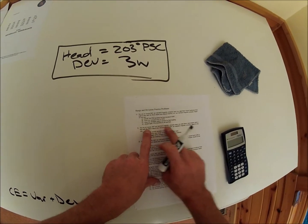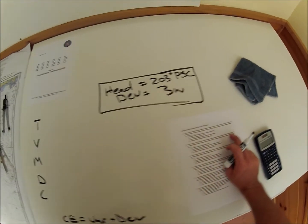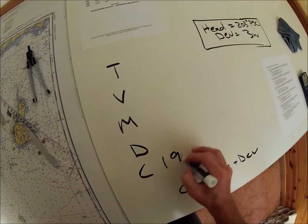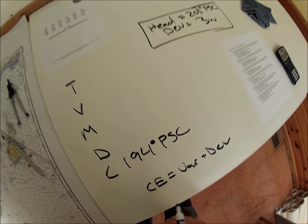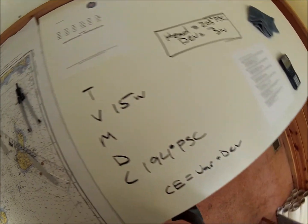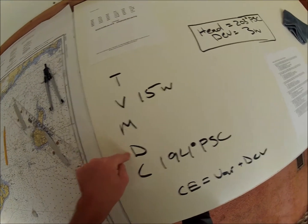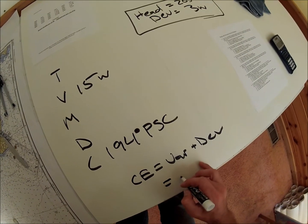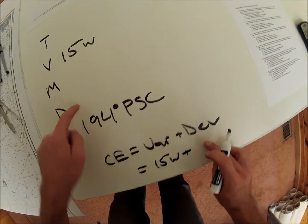It says when we sight Block Island North Light in line with Block Island Arrow Beacon bearing 194, 194 degrees PSC. Okay, we know the variation is 15 west, and we can't fill in the deviation because this is what we are calculating. Down here, variation 15 west plus our calculated deviation goes here.